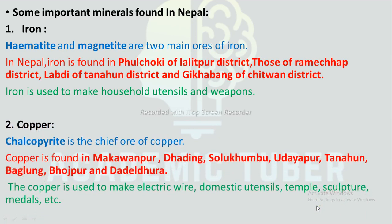Second: Copper. Chalcopyrite is the chief ore of copper. Copper is found in Makwanpur, Dhading, Solukhumbu, Udayapur, Tanahu, Baglung, Bhojpur, and Dhaili Dhura. Copper is used to make electric wire, domestic utensils, statues, sculptures, and metal alloys.